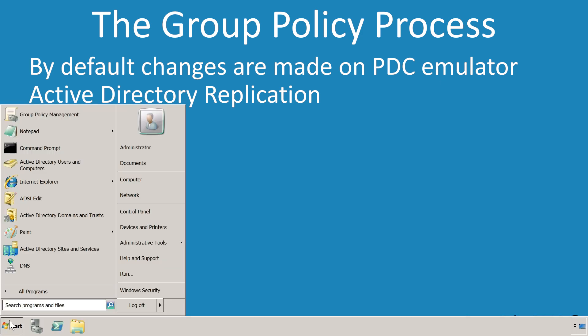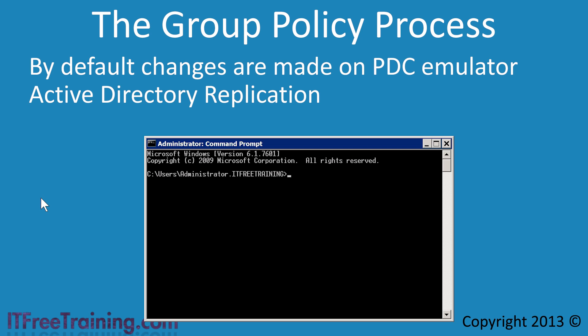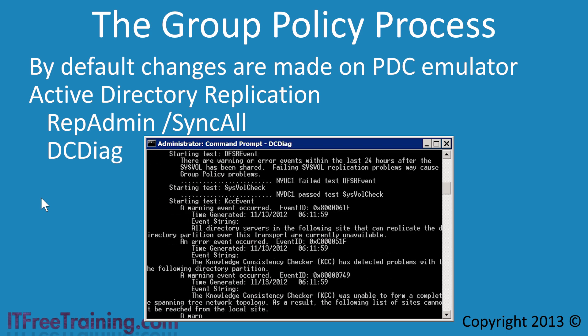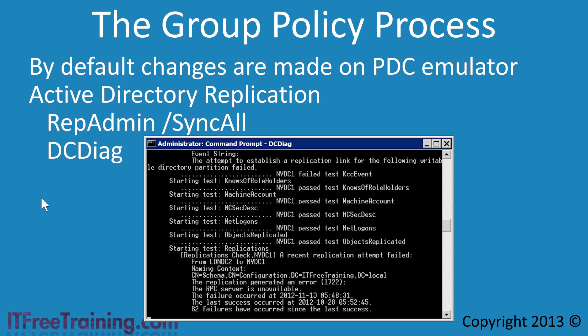The same result can be achieved from the command prompt. To force a replication from this Domain Controller to all its replication partners, run the command repadmin with the parameter /syncall. In some cases you may have problems with synchronization between your Domain Controllers. To check for problems, you can run the command dcdiag. Even though the last command ran without any errors, when dcdiag was run some errors have been found. In this case the RPC server is unavailable and there have been 82 failures since the last replication. It is a good idea to check for replication problems using tools like these or to look in the event viewer. If replication is not working then your clients are not getting Group Policy updates.